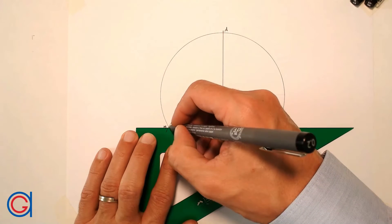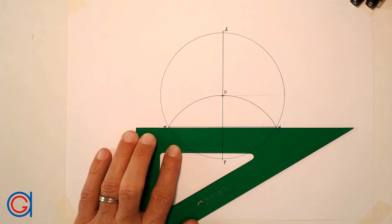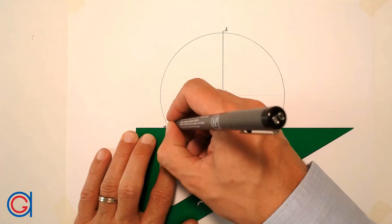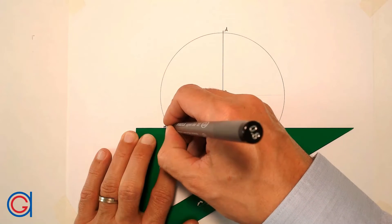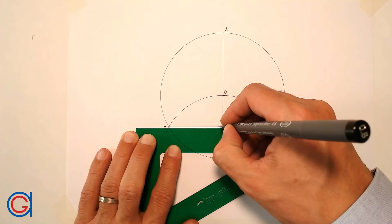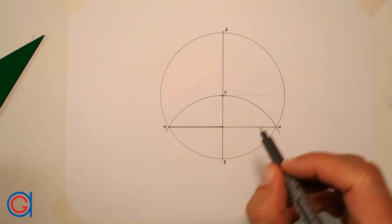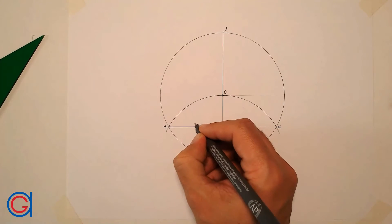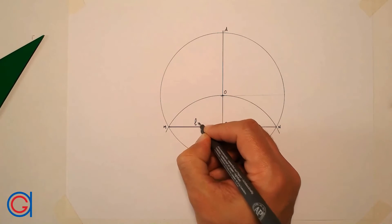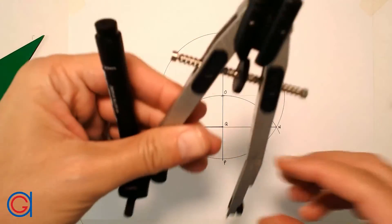The next step is to join points M and N with a horizontal line, as can be seen here in the video. This line cuts our vertical diameter at a midpoint which we will call Q. We underline the line segment MQ, which is going to be the length of the side of our heptagon that we are looking for.